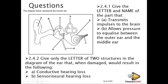Here is a diagram. When they say give the letter and the name, they give a letter on the diagram and ask for the name of the part that transmits the impulse to the brain. You need to know the part and its function. The answer is F — auditory nerve.